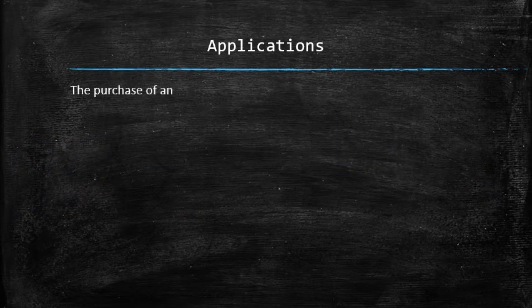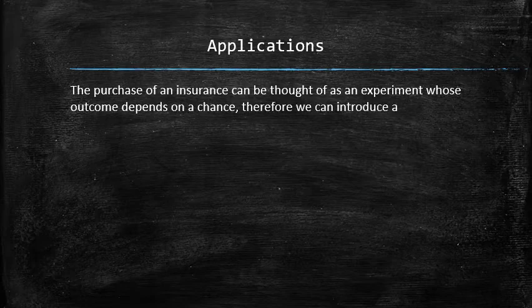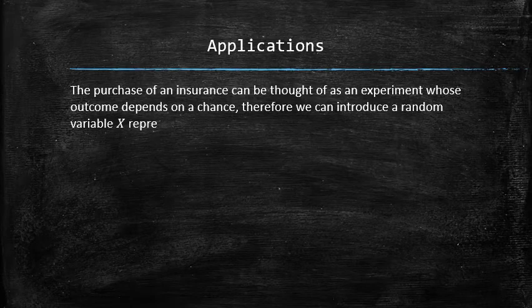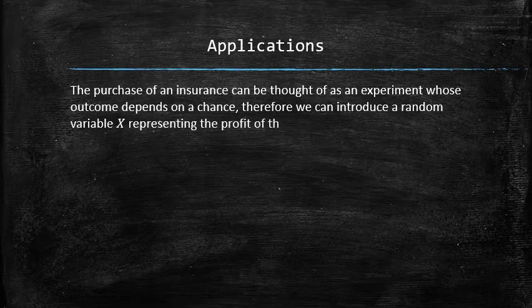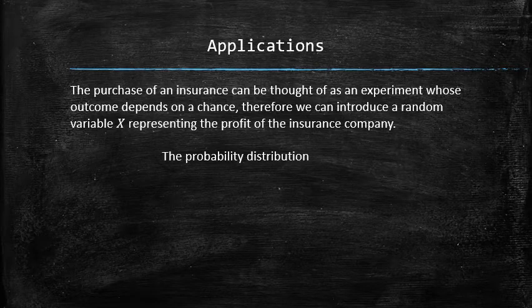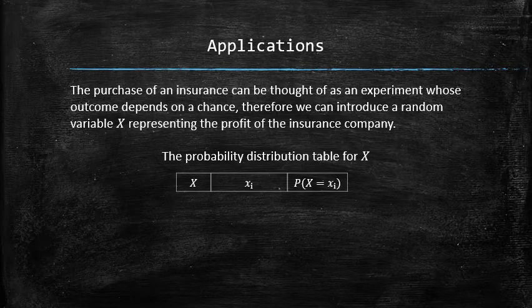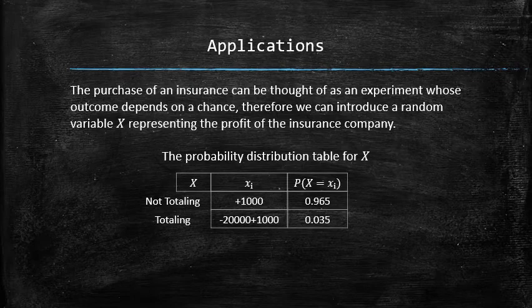The purchase of an insurance can be thought of as an experiment whose outcome depends on chance. Therefore, we can introduce a random variable x representing the profit of the insurance company from selling the insurance to Bobbert. Then the following probability distribution table can be constructed for x by listing all possible values of x for not totaling and totaling scenarios along with their probabilities.